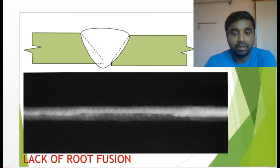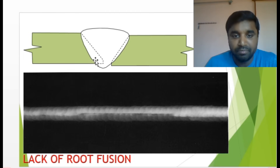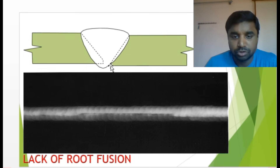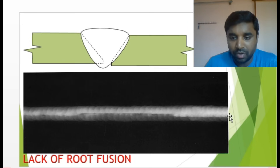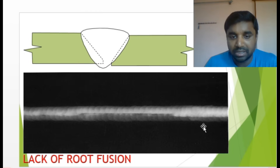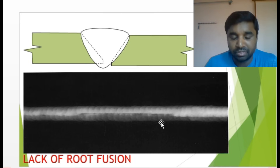Lack of root fusion — you can see there is a misalignment of the weld joint. As I mentioned in a previous welding video, if misalignment is there, then lack of root fusion will occur. In the radiograph, from beginning to end of the weld, one side density is high and the other side density is different. This density difference tells you the misalignment is there — that's why it's called lack of root fusion.